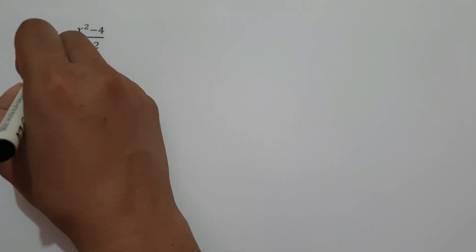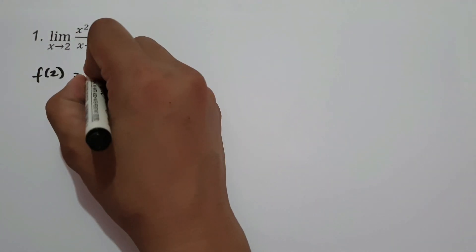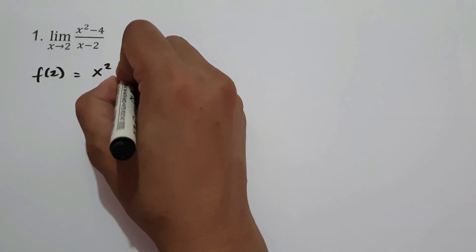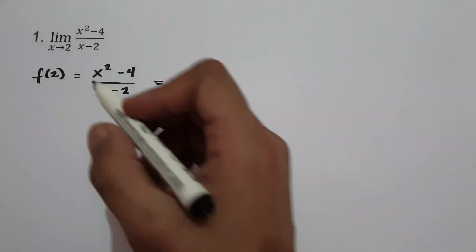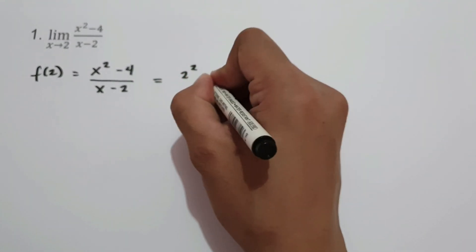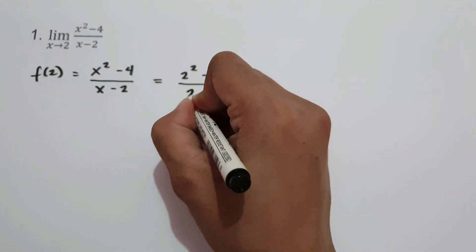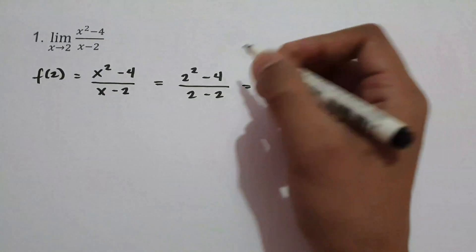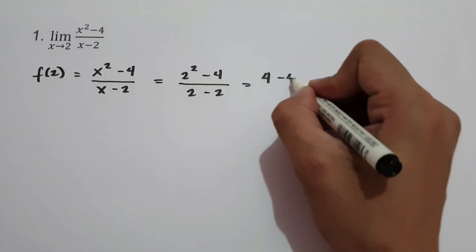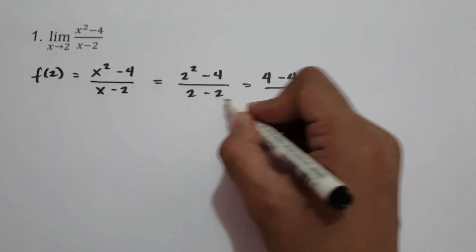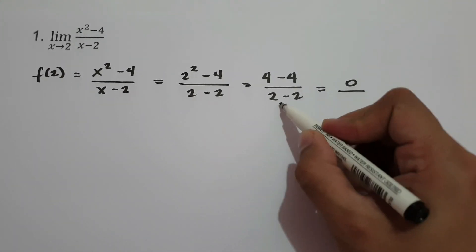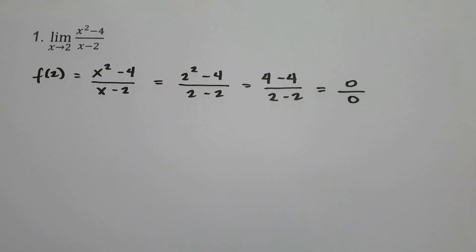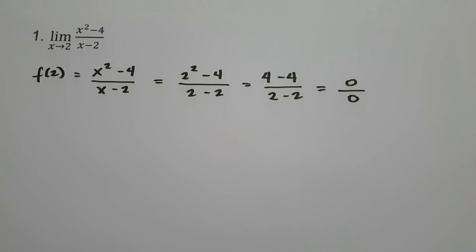Let's say f(2): that is x squared minus 4 all over x minus 2, where x equals 2. So we have 2 squared minus 4 over 2 minus 2 — that is 4 minus 4 over 2 minus 2, which gives 0 over 0. Therefore, if we substitute the value of x, we don't have a specific value for the given limit.